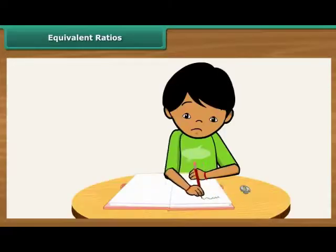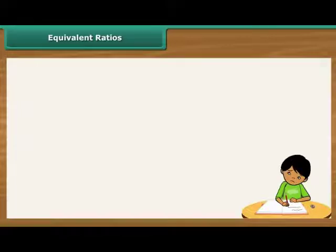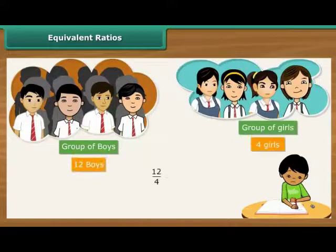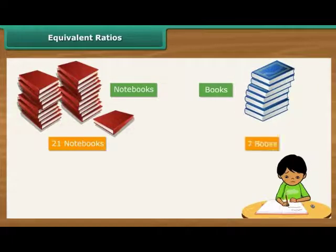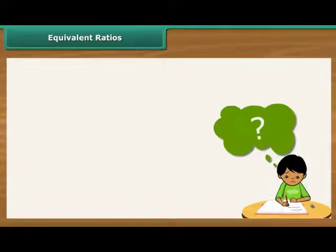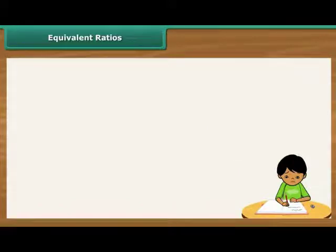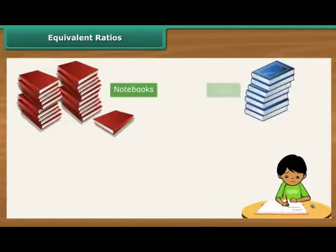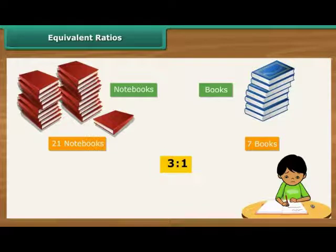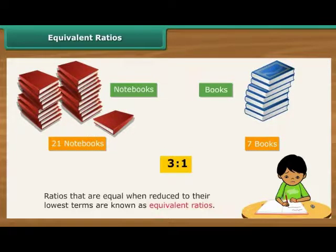Equivalent Ratios. Ritesh is learning to calculate ratios and is enjoying it. But there is one thing that is confusing him. He first calculated the ratio of boys to girls in his class as 3 is to 1. He then calculated the ratio of notebooks to books in his bag, which also works out to be 3 is to 1. Ritesh wonders: can two ratios be the same? Yes, they can be. The first tells us that boys are 3 times more than the girls; the second tells us that notebooks are 3 times more than the books. Ratios that are equal when reduced to their lowest terms are known as equivalent ratios.